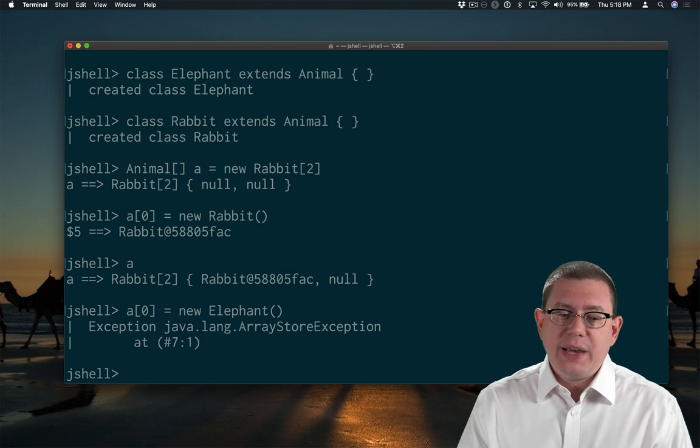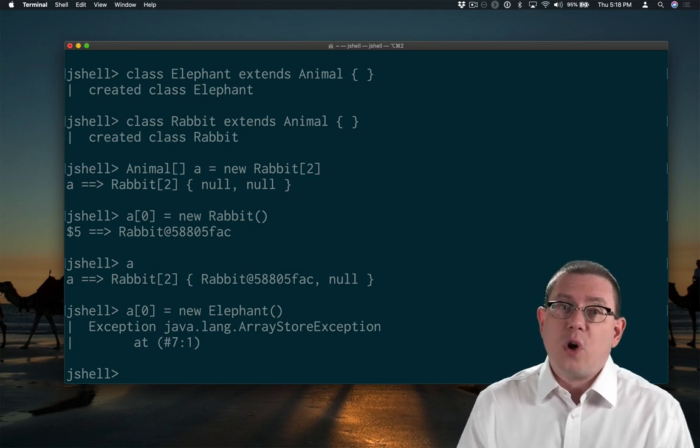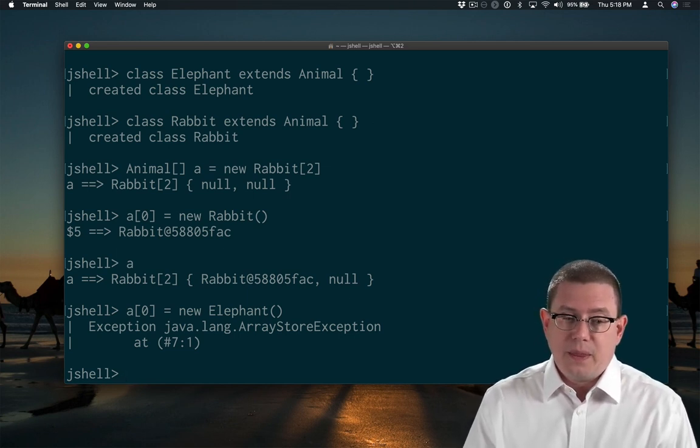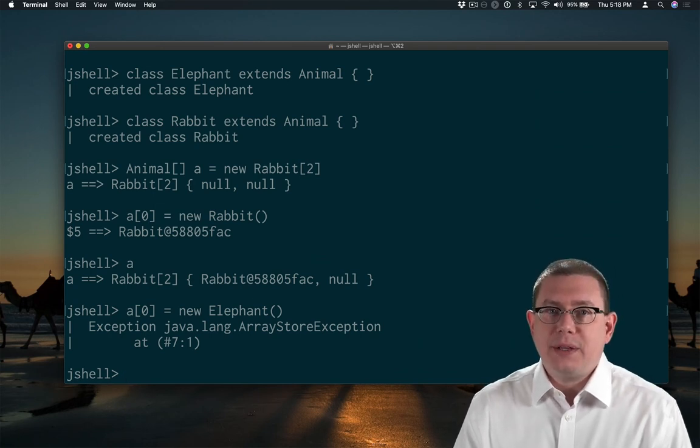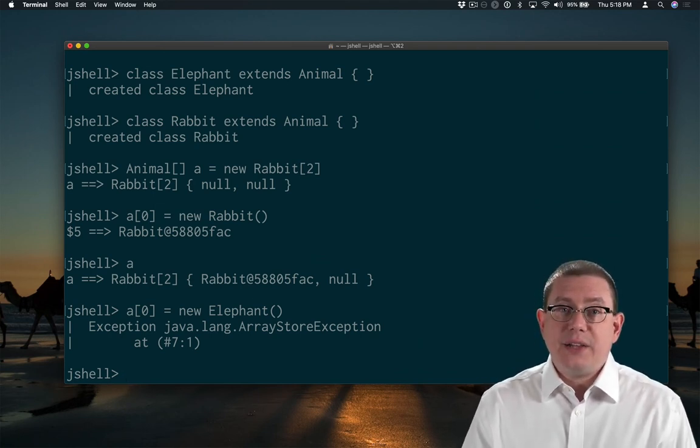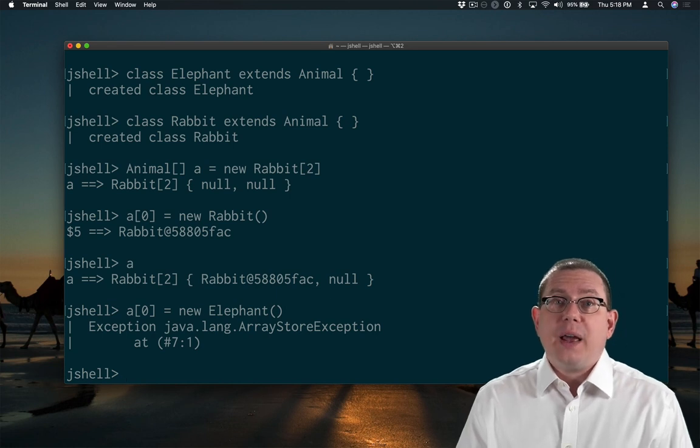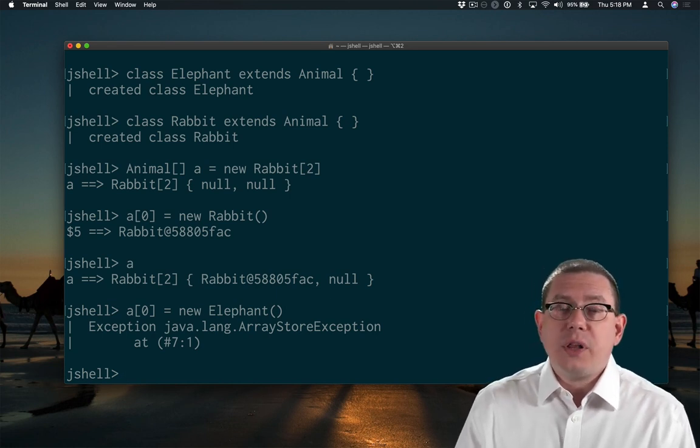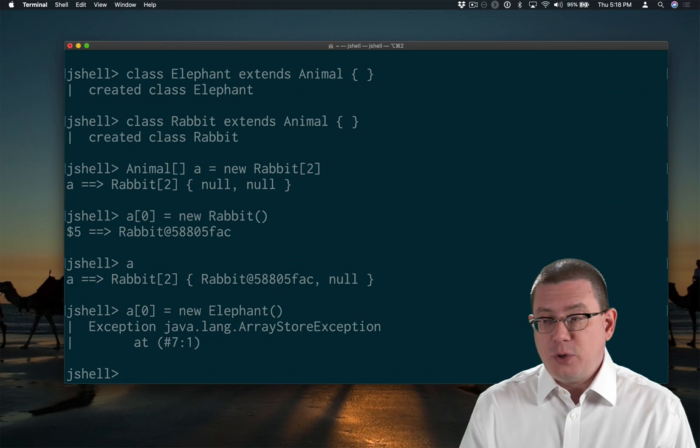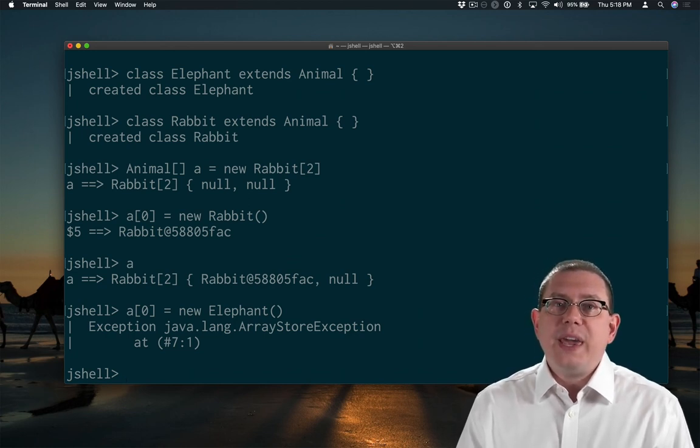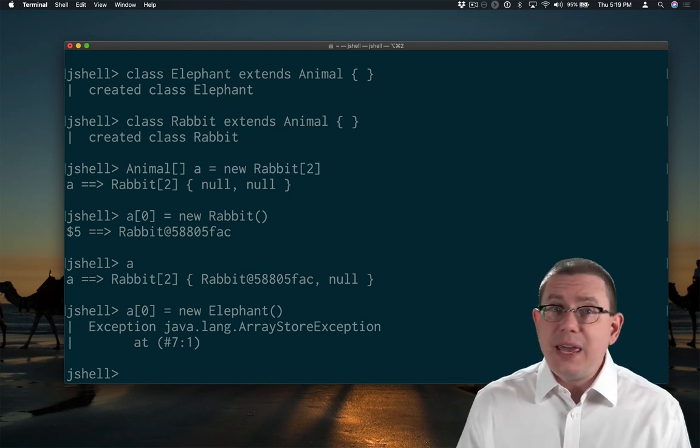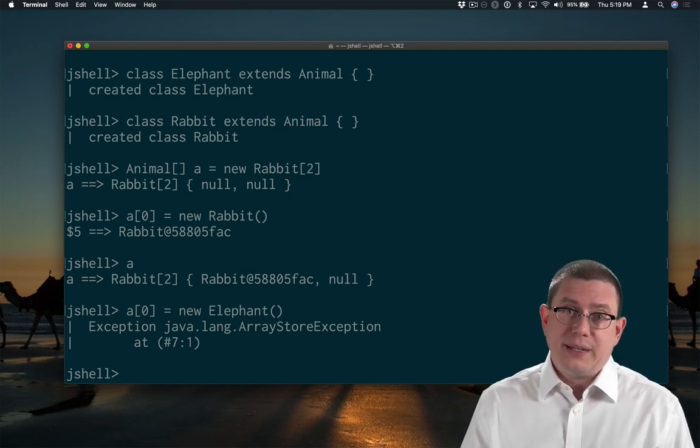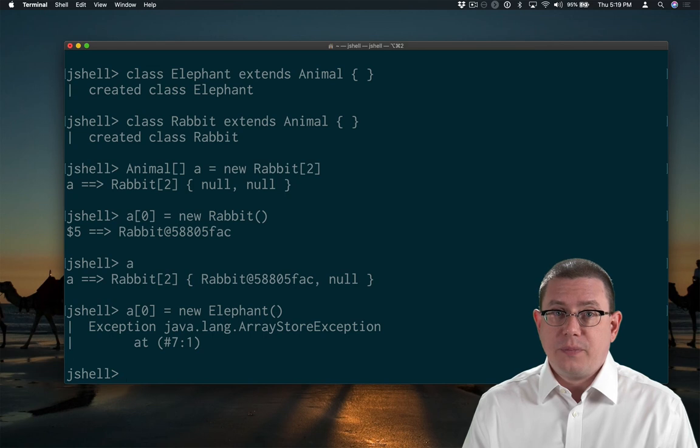An ArrayStoreException is raised when you try to store something of the wrong type in an array. Now, in this case, the array is an array of rabbits. That's what it was created as, and so it can only ever hold objects that are of class Rabbit. Now, maybe you could have a subclass of Rabbit. That would be fine. But you can't stick something that's not a Rabbit in that array, even if you have a reference to that array as an Animal array.